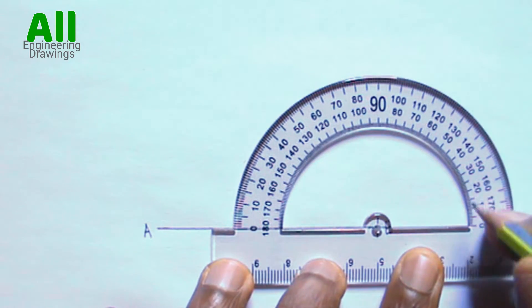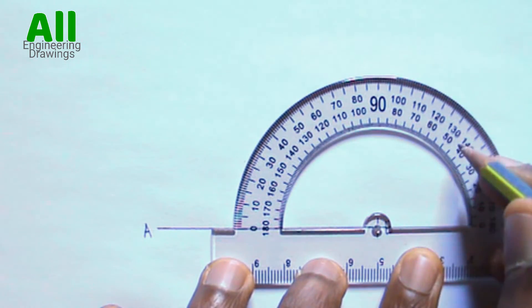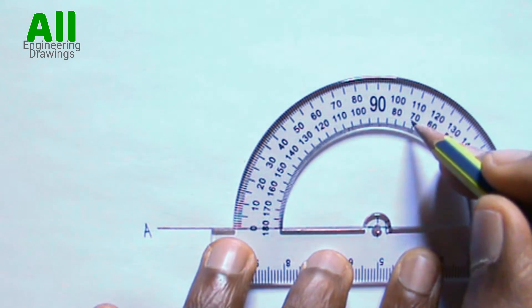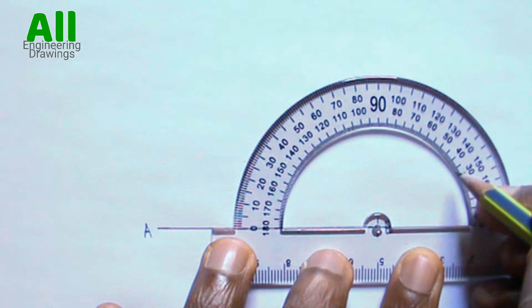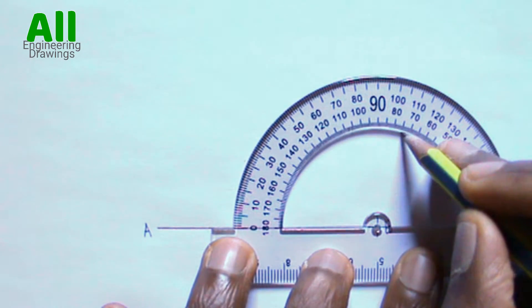Then mark the given angle. If you are given angle 30, you have to mark angle 30. If you are given angle 60, you have to mark angle 60. So I'm marking the given angle.